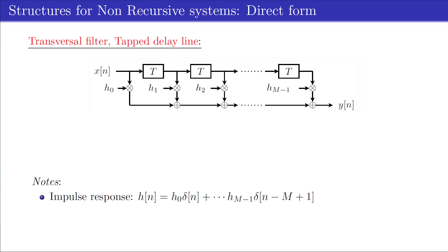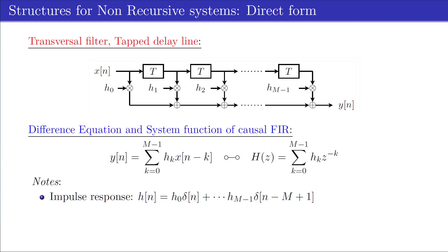since its impulse response has finite length, and the output signal Y depends only on current and previous values of the input signal X. The difference equation and system function are given by the equations. The system function contains, except poles at Z equals 0, only zeros.